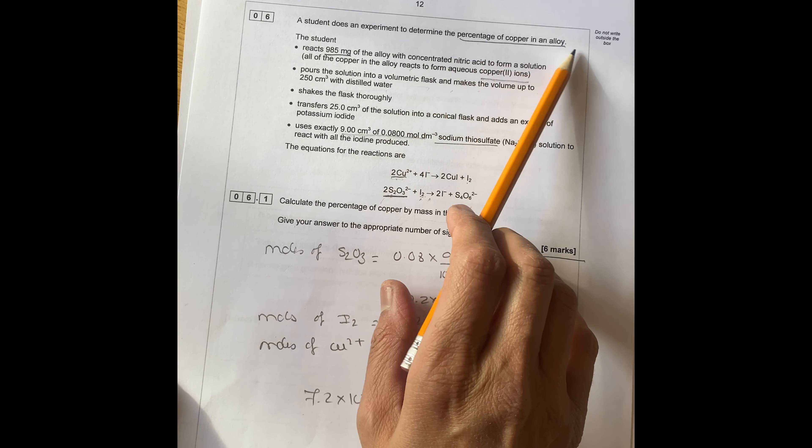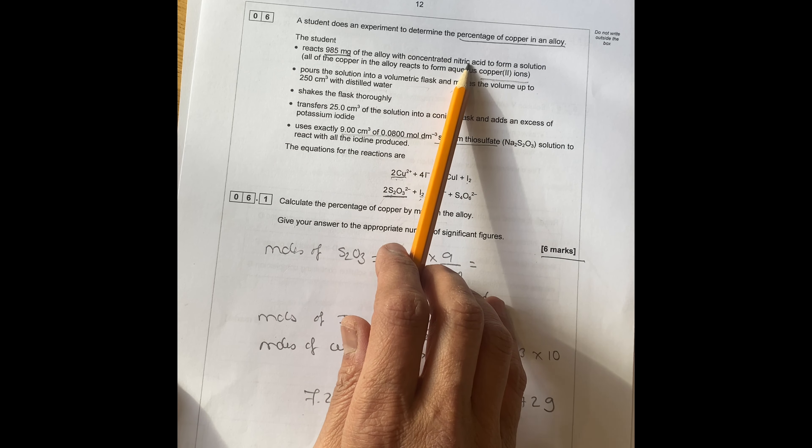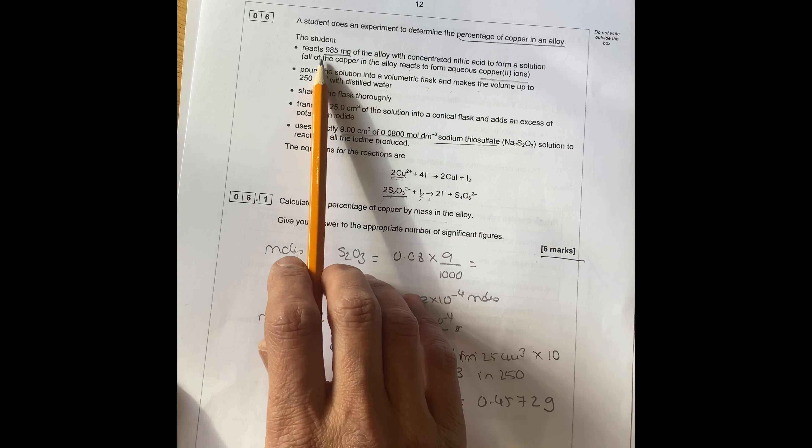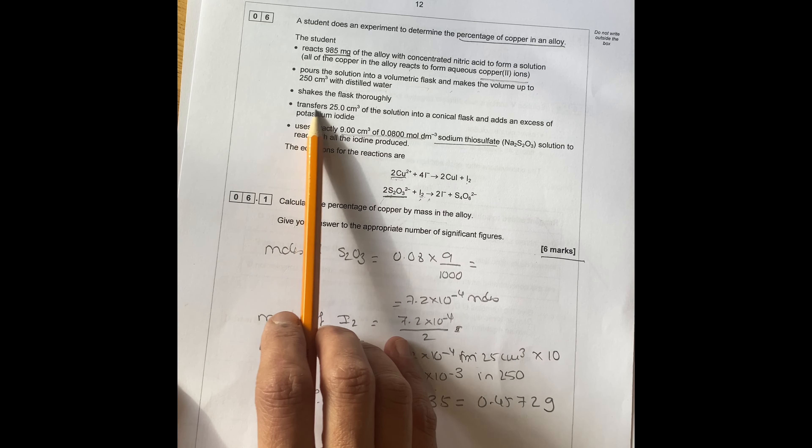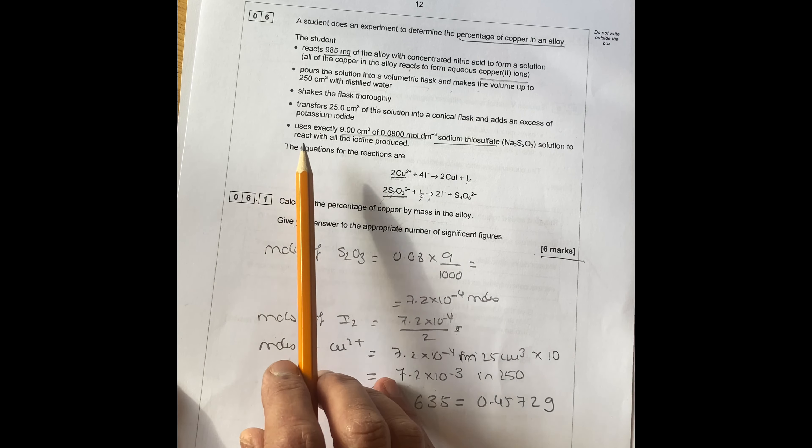A student does an experiment to determine the percentage of copper in alloy. The student has 985 milligrams of alloy with concentrated nitric acid to form a solution. All copper of the alloy reacts to form aqueous copper 2 ions, pours the solution to volumetric flask, makes up the volume to 250 with distilled water, shakes the flask, transfers 25 of the solution to conical flask and adds excess potassium iodide. Uses exactly 9.9 centimeters cubed of 0.08 mol per dm cubed sodium thiosulfate. Solution reacts with iodine, all the iodine produced. The equation is shown here.